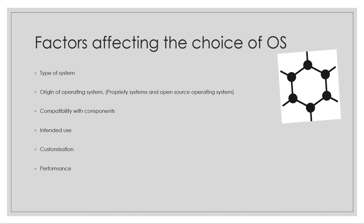Performance is a really big deciding factor, especially for businesses. The better the performance, the quicker people can work and produce better quality output. Obviously, cost is also important — Windows doesn't cost a lot, probably around 40 pounds for an average user, but for a business an industrial license could cost a few thousand, depending on what you need.